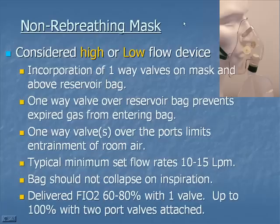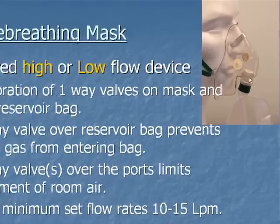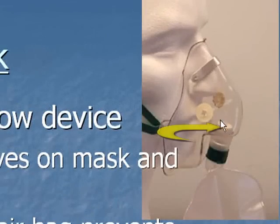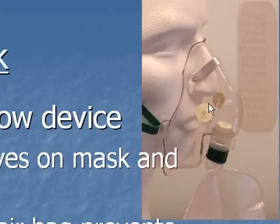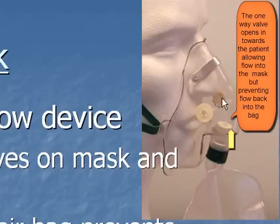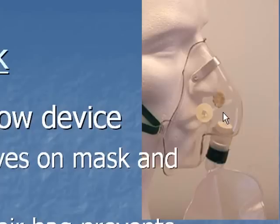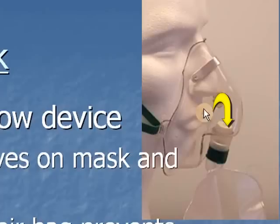The non-rebreather mask is a fairly commonly used mask — somewhere between high and low flow. There is an actual one-way valve between the patient and the bag, different from the partial rebreather. Oxygen fills the bag, and when the person breathes in, the valve opens toward the person, giving them that FiO2 of oxygen. When the person exhales, the valve closes and carbon dioxide is sent out through the air entrainment ports on the side.